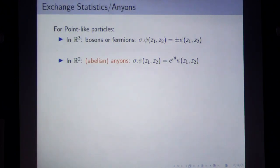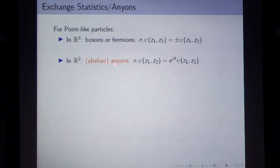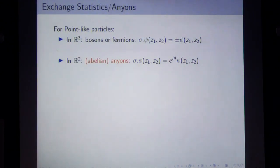In R2, however, interesting things can happen. You can have something called anyons. In particular, abelian anyons: when you interchange the positions of two identical particles, the wave function can acquire a phase e^{iθ}. This θ represents any phase — that's why they're called anyons. It has to have finite order, but almost any phase is possible.